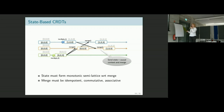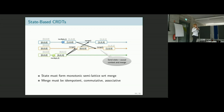For state-based CRDTs, the state must form a monotonic semi-lattice with respect to the merge. This means whenever you have an update or merge, you get a state that contains more information — more information potentially means it's larger. For the merge to work, it must be idempotent, commutative, and associative. This guarantees you merge to the same state if states are merged in different orders.